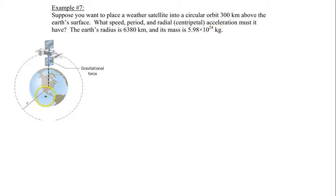Let's label this diagram to show you where the 300 kilometers are and then the 6,380 kilometers. This is definitely not drawn to scale. The 300 kilometers is the altitude of the satellite above the Earth's surface, and the 6,380 kilometers is the radius of the Earth. So r is the total distance of these two added together.